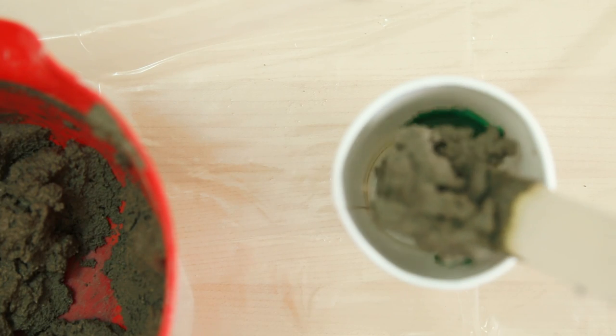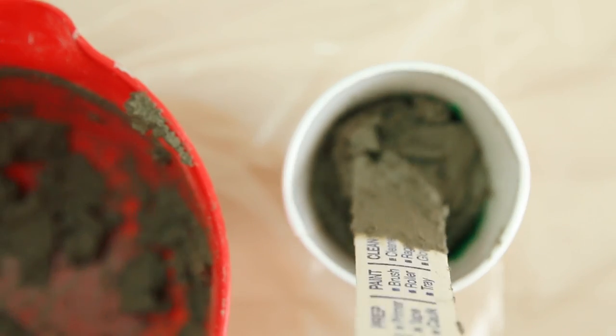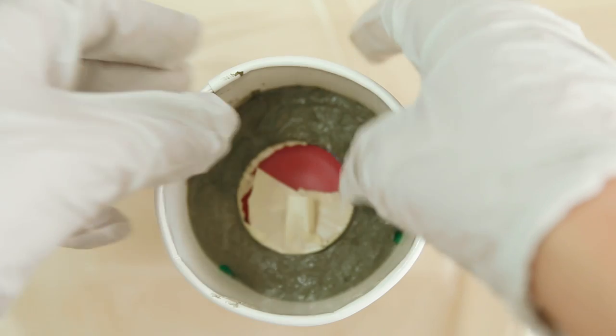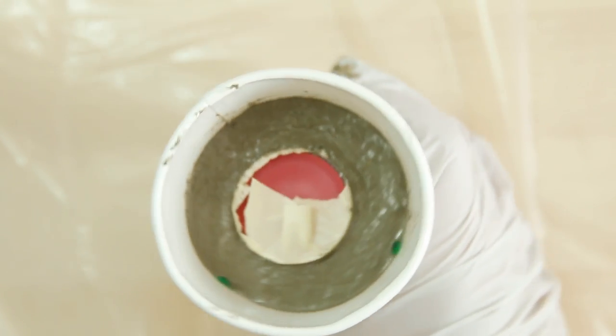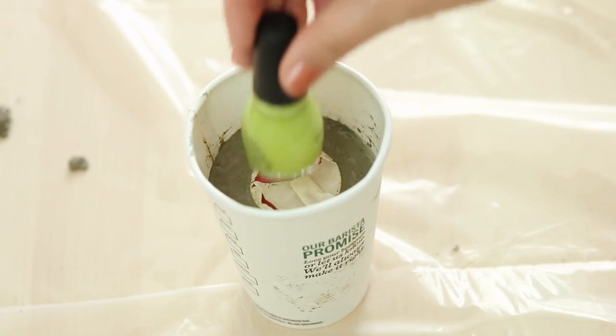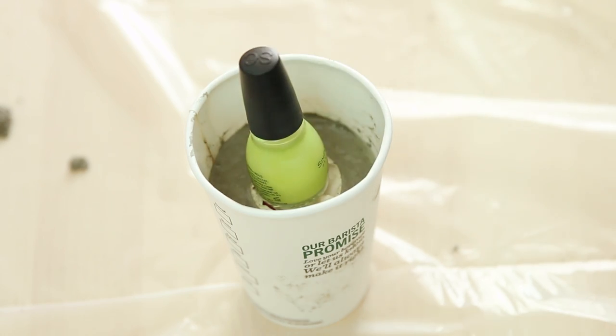Pour the cement into the mold. Then push the candle mold in and you can also tap your container to release any air bubbles. The candle mold might float up while it dries so you can put a weight on top of it so it stays in place.